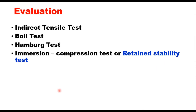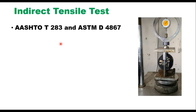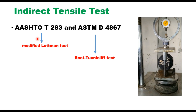There are a number of methods for evaluating the moisture sensitivity of a mix. The effectiveness of a particular method is dependent on the local conditions and local materials. The most commonly used methods are the indirect tensile strength test (ITS test), boil test, Hamburg test, and immersion compression test, also known as the retained stability test. The ITS or indirect tensile strength test is the most common test procedure for evaluating moisture sensitivity of asphalt mixtures, given in AASHTO T283 and ASTM D4867.